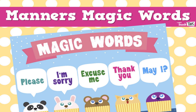I'm sorry is used when you hurt someone by mistake. Excuse me is a polite way of trying to get someone's attention. Thank you — if someone helps you or gives you a gift, you say thank you. These are the five magic words: please, I'm sorry, excuse me, thank you, may I. Always use these magic words — these are good manners.